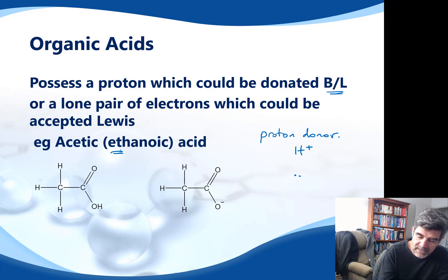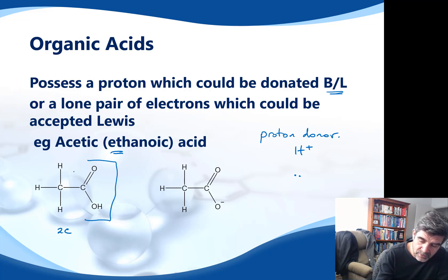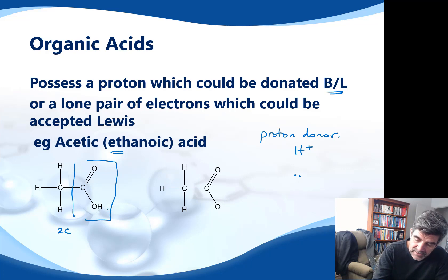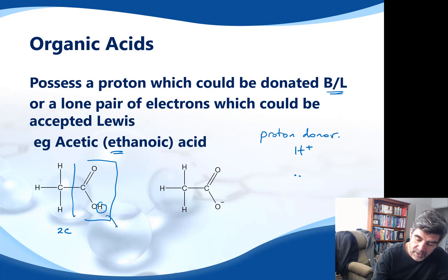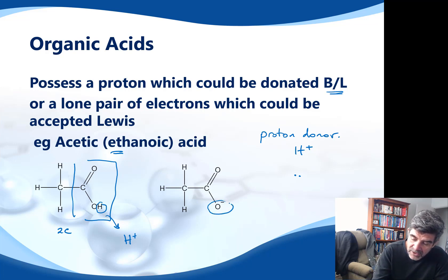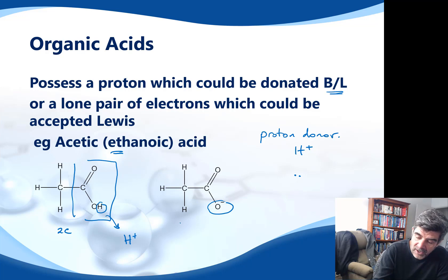Being ethanoic means it has two carbons, and these two carbons include the acid functional group — the COOH group. The hydrogen in this group is polar bonded to the oxygen through a polar covalent bond, and can actually be released from this molecule as an H+ ion. That would leave the oxygen behind with a negative charge, forming an anion — we would call it the acetate or ethanoate ion.